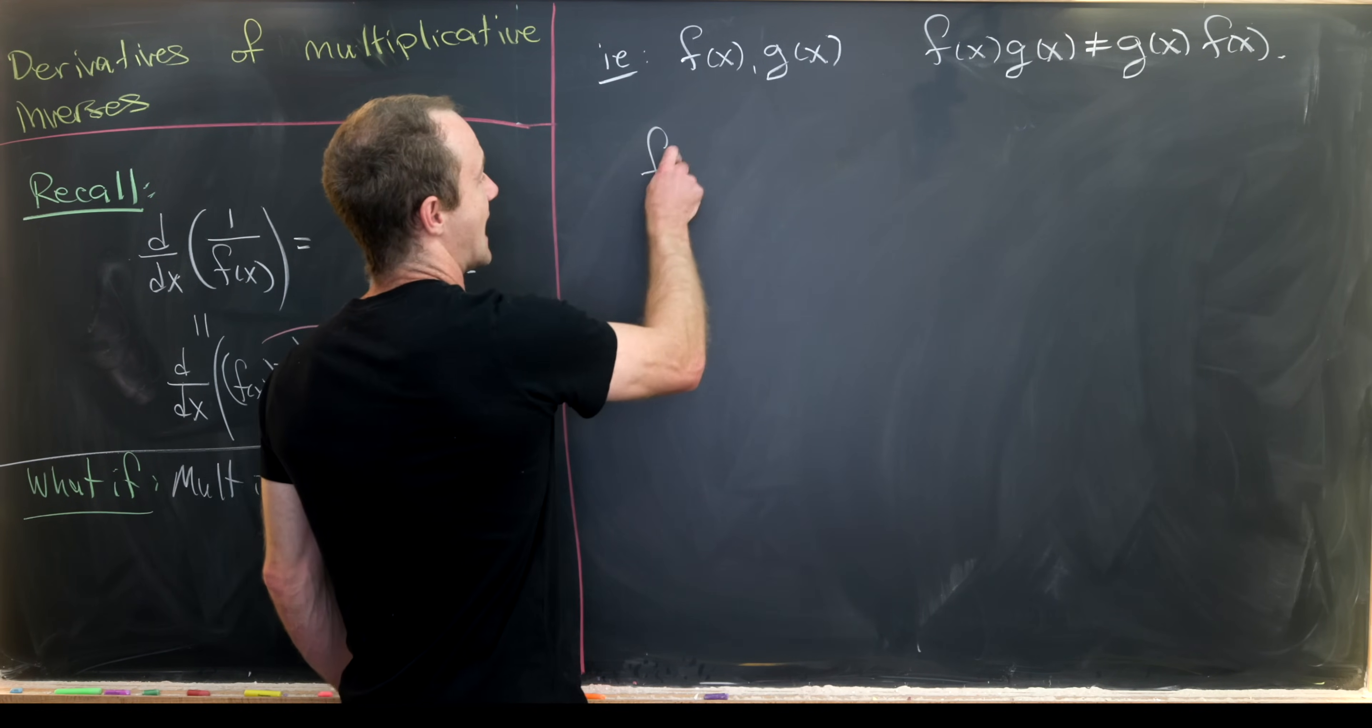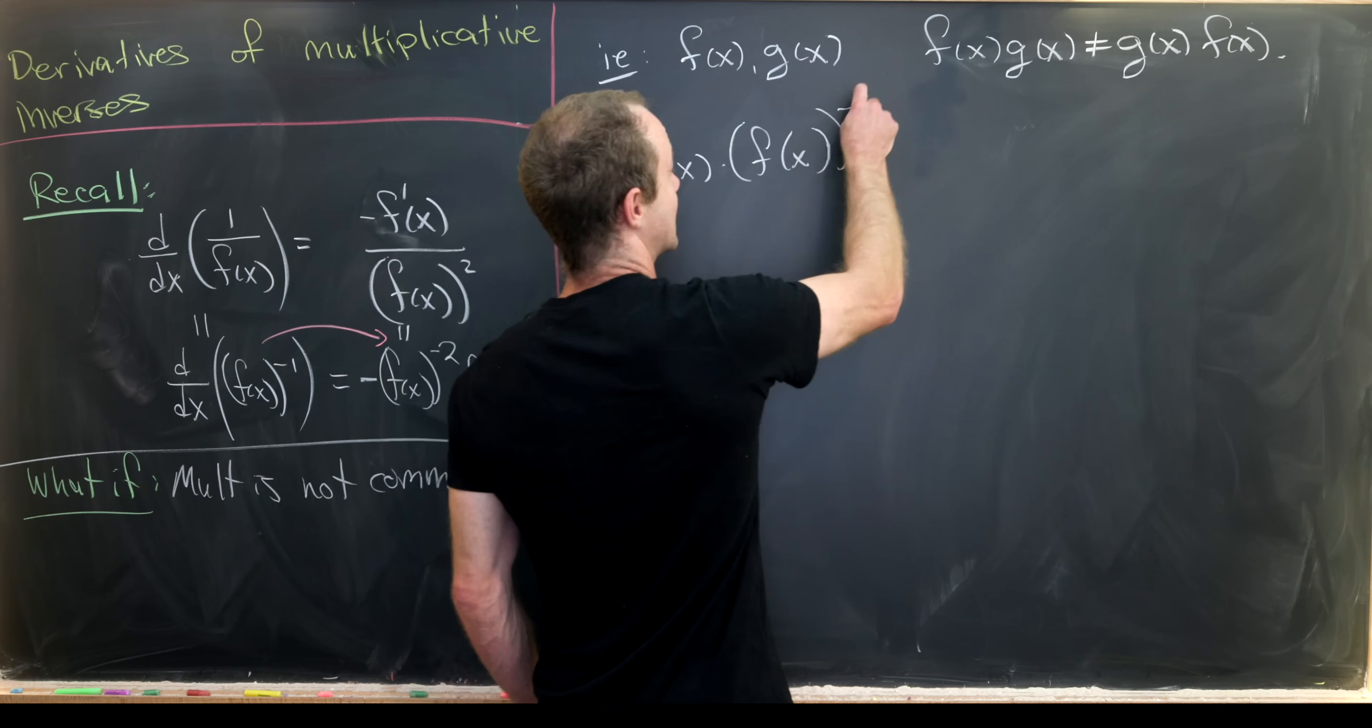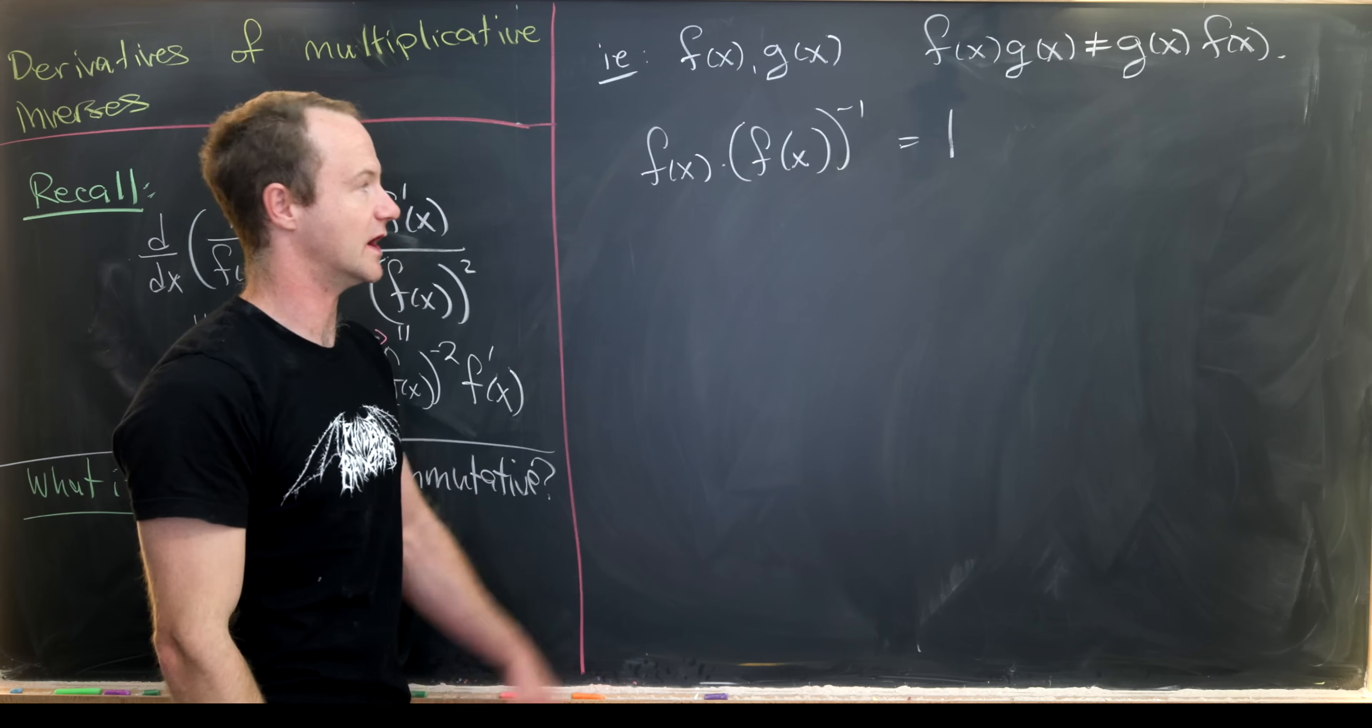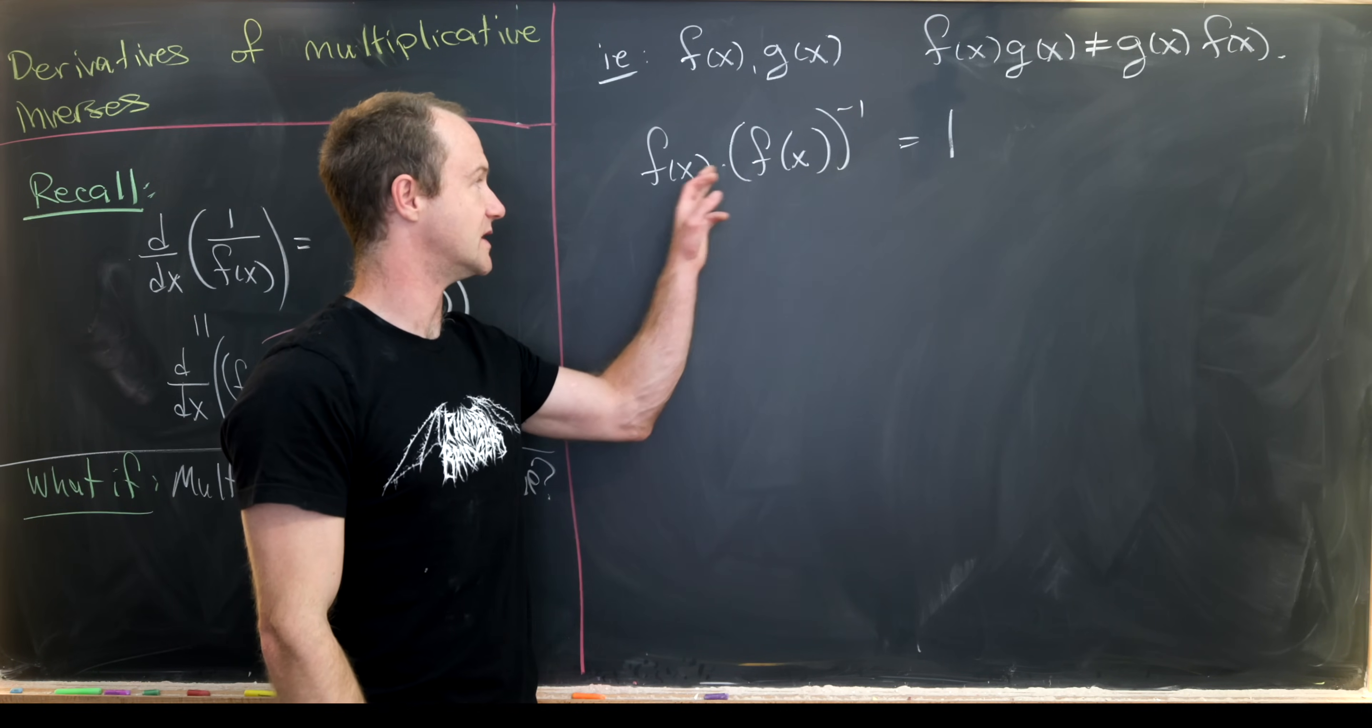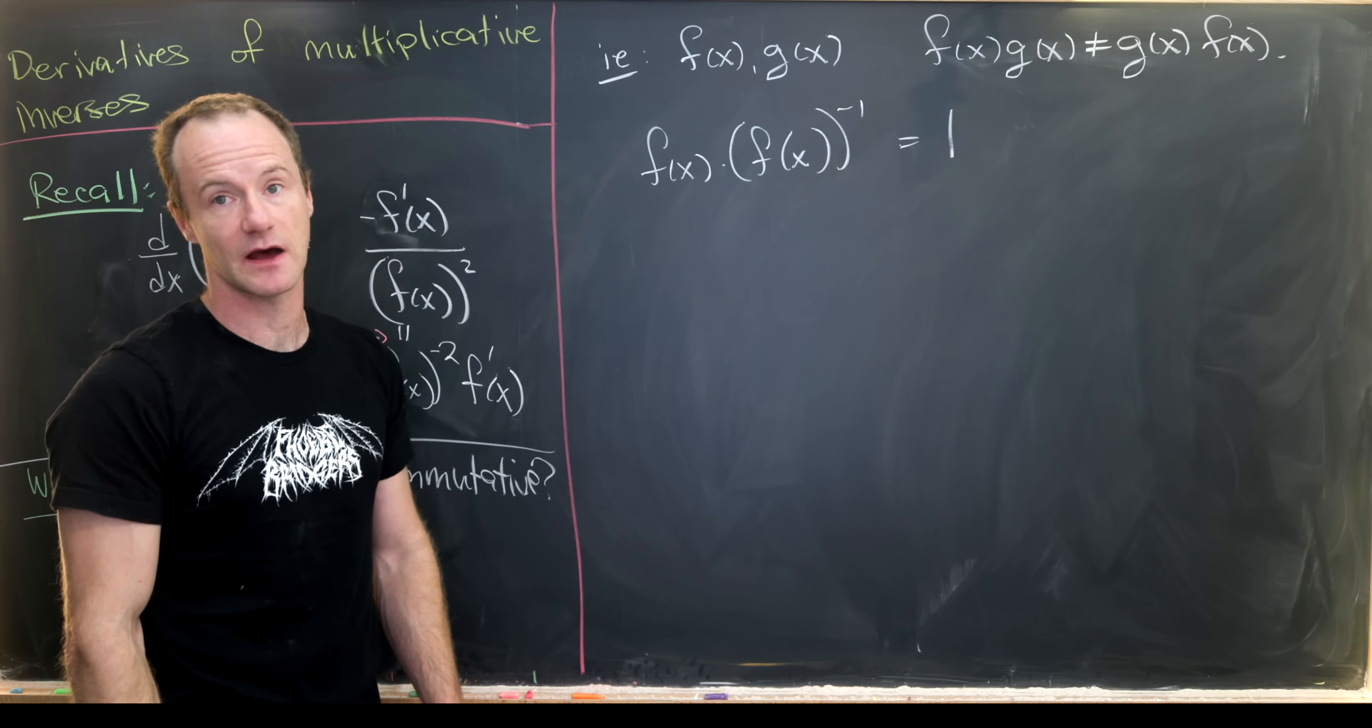Let's look at f(x) times f(x) to the negative 1, and notice that multiplies together to give us the number 1. This is, of course, assuming that f(x) has a multiplicative inverse, but we'll keep that as an assumption for now.